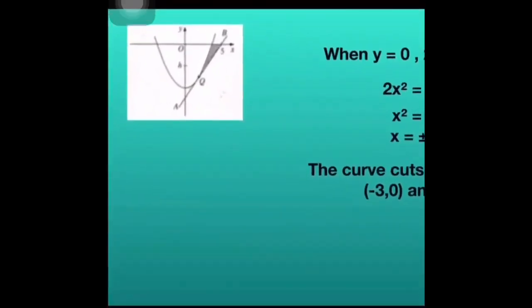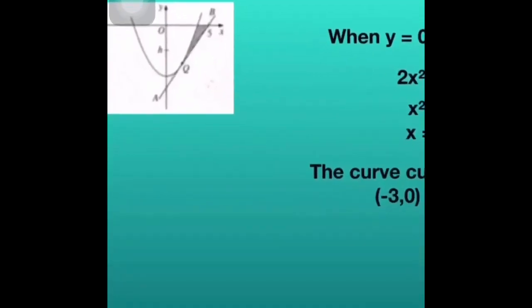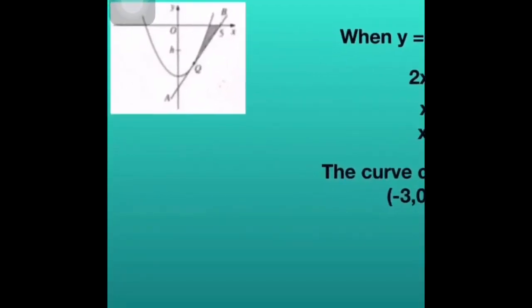Selanjutnya dia nak kita cari area of the shared region. Macam mana nak cari area tu? Kita tengok. Sekarang kita kena cari roots of the curve dulu sebab nak tahu range dia berapa. Kita dapat plus minus 3. Yang belah kanan tu 3, belah kiri tu negative 3. Yang negative 3 tu tak penting. Sekarang kita fokus kat belah kanan.